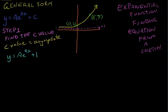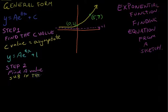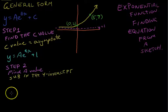Step 2 is to find the A value. Finding the A value is fairly easy. You just need to sub in the y-intercept. When we do that, you'll see what happens. The y-intercept is (0, 2), so there's a y value of 2 and an x value of 0.